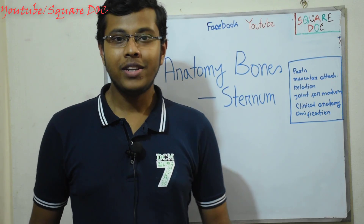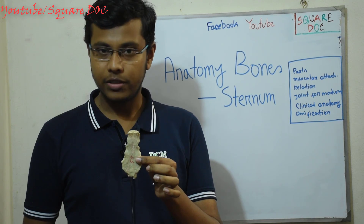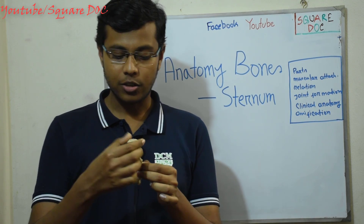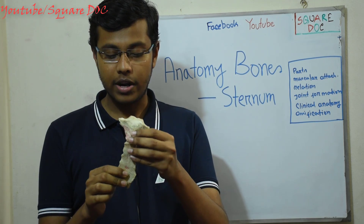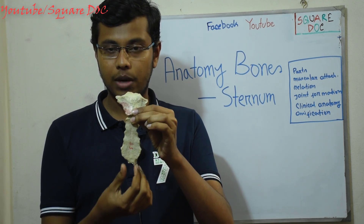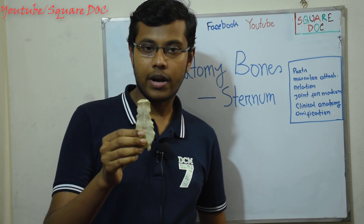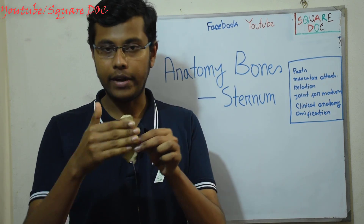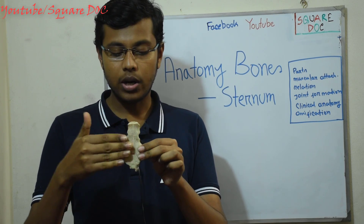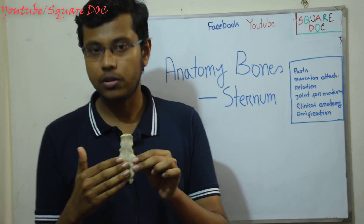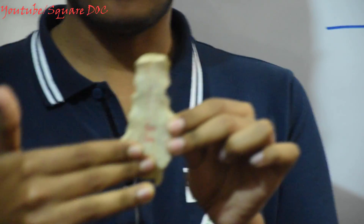The body of the sternum — its parts are the xiphoid process. The body of the sternum is a flat bone; the full sternum is called a flat bone. The body of the sternum has a compact bone layer.